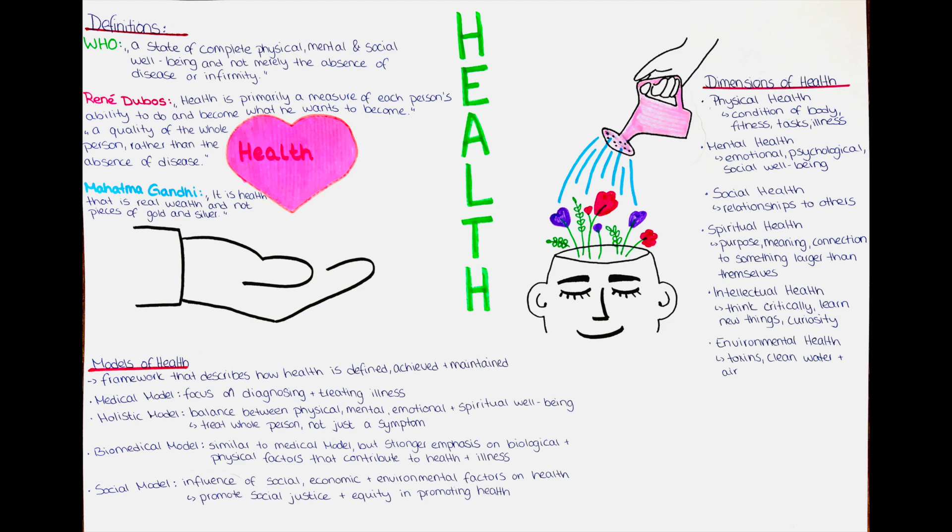While there are similarities between these three definitions, there are also notable differences. Dubois and Aristotle focus primarily on the physical and mental dimensions of health, while Gandhi's definition incorporates broader social, environmental and spiritual factors. Additionally, while Dubois and Aristotle emphasize individual health responsibility and lifestyle factors, Gandhi places greater emphasis on the role of social and economic justice.